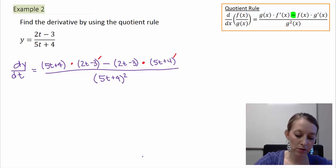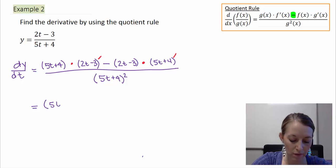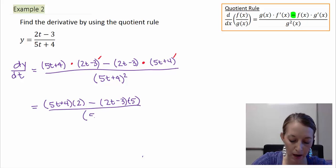Either notation that you want to use, or in fact, even if you skip this step, that would be fine too. So my original of the bottom, my low d high times the derivative of the top, which is 2, minus the original of the top times the derivative of the bottom, which is 5. Low d high minus high d low all over the bottom squared.